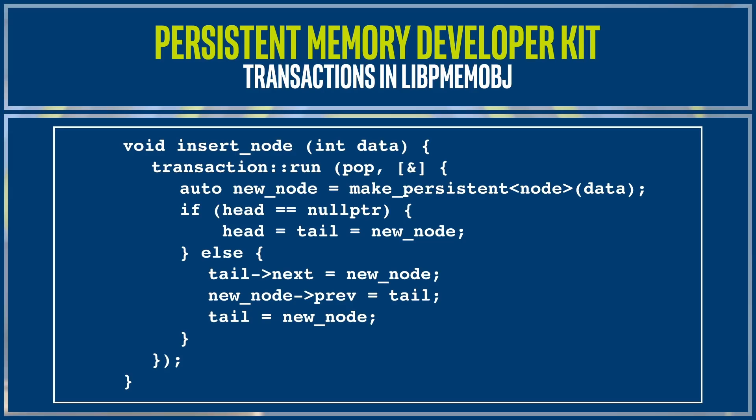In addition to atomic updates, libpmemobj transactions can also be synchronized in a multi-threaded application by passing a mutex variable to the transaction.